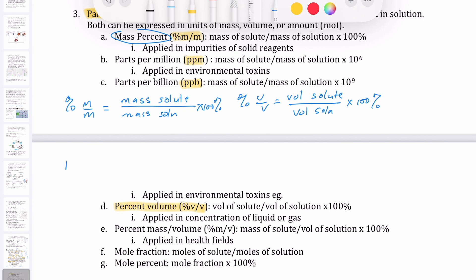If you go to parts per million, the only difference there is you do mass of solute over mass of solution. Now, but then multiply by 10 to the 6, which is a million. And if it's part per billion, then it would just be multiplied by 10 to the 9.